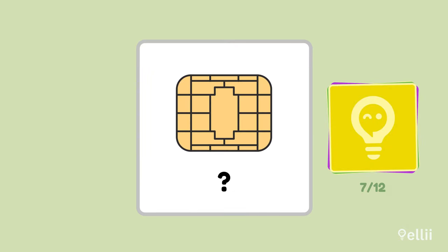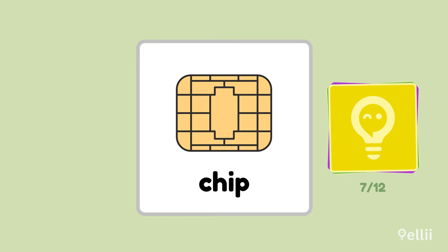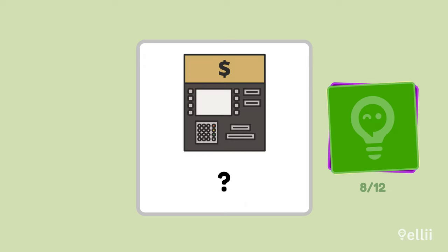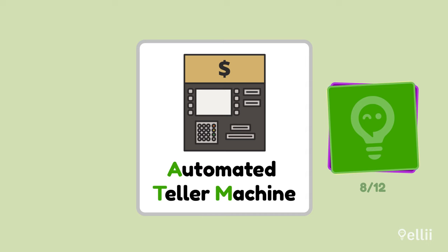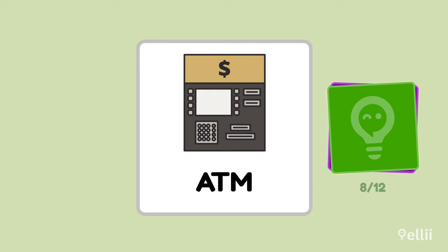What is the shiny metallic square on most credit and debit cards called? Chip. Some machines use this chip to get your banking information. What's this machine called? ATM. ATM stands for Automated Teller Machine and it's able to do many banking functions for you.